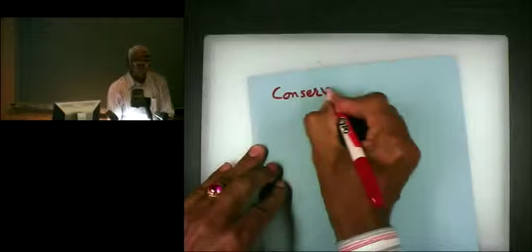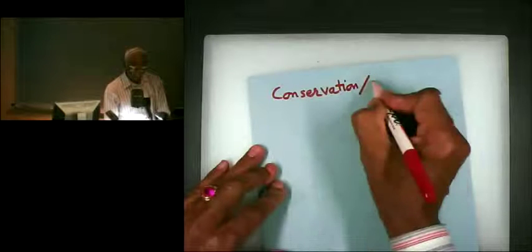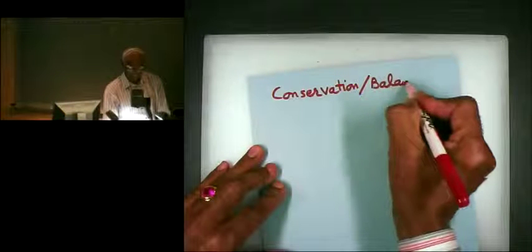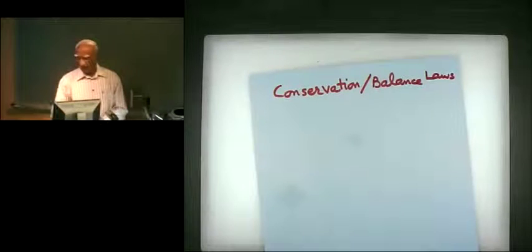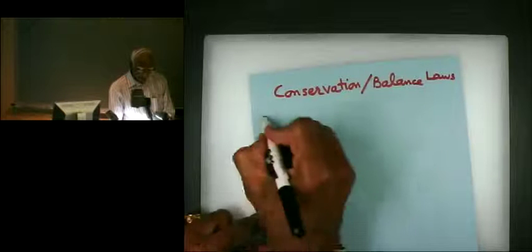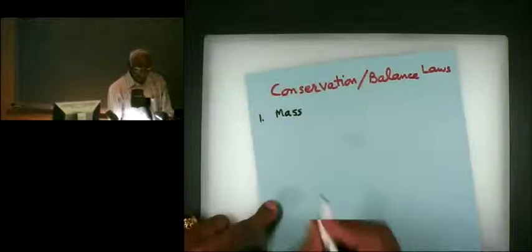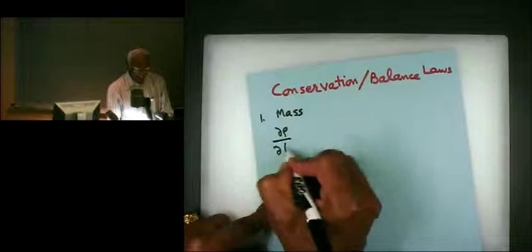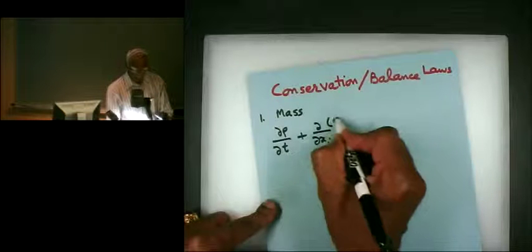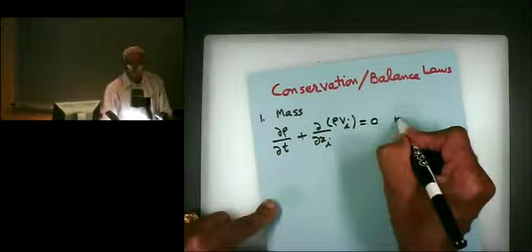So what we were doing was studying conservation or balance laws. Some people call them conservation laws, some call them balance laws, some say equations of motion, or governing equations. The first one is the balance of mass: delta-rho over delta-t plus delta over delta-x_i of rho v_i equals zero. This is true in the present shape omega.